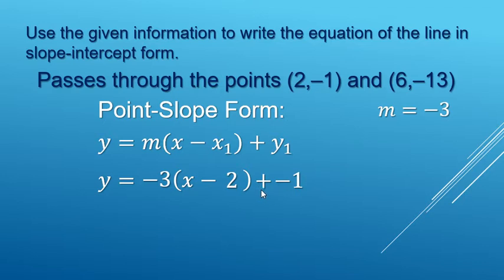We normally don't add a negative, so let's go ahead and clean that up a little bit, and call it minus 1 instead. Now, we do need to simplify this or clean it up more. We're going to use the distributive property. Negative 3 times x is negative 3x, and negative 3 times negative 2, that's a plus 6 there. And then we also have 6 minus 1 that we can simplify more, and there's our slope-intercept form.